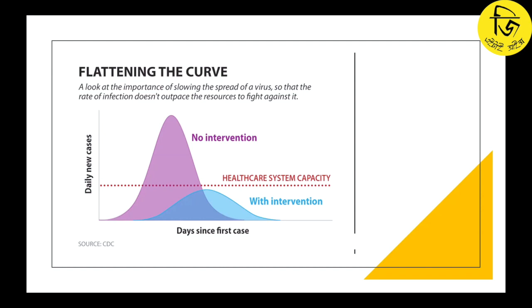For infectious diseases, we need to use pharmaceutical and non-pharmaceutical interventions to flatten the curve. The pharmaceutical intervention includes vaccines and prophylactic treatment. We need to consider that many COVID deployments have not yet had a proven vaccine available, so exposure-based prophylaxis was considered.